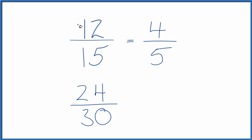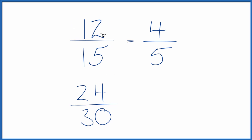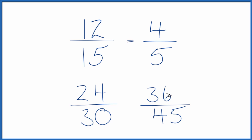How about we triple the numerator and denominator? 3 times 12 is 36, and 3 times 15 is 45. So 36 forty-fifths is another equivalent fraction for 12 fifteenths. And these are all equal — if you divide 12 by 15, 4 by 5, 24 by 30, or 36 by 45, they'll all give you the same decimal. These are equivalent fractions.